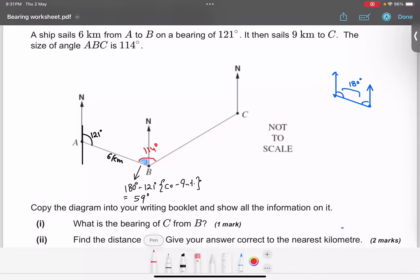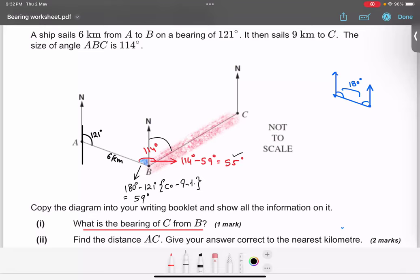Now with the help of this thing, can you tell me the other part? This will be 114 minus 59, which equals 55 degrees. Now the question is, what is the bearing of C from B? From B they are asking, from this side, they are asking what is the bearing. So eventually they are asking us to calculate this angle, which is already calculated as 55 degrees.